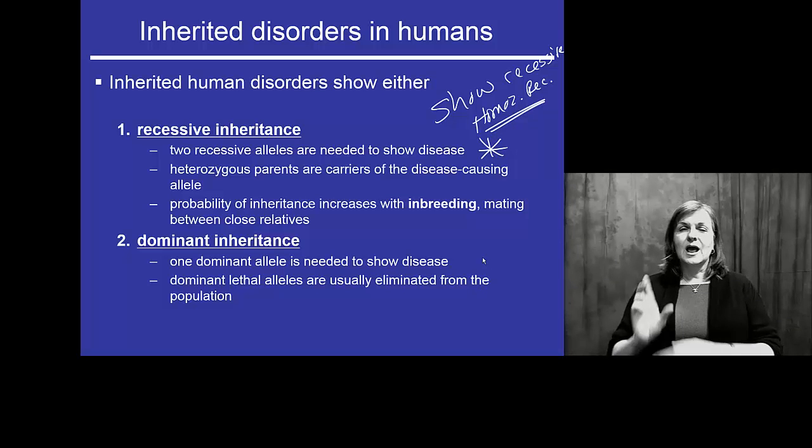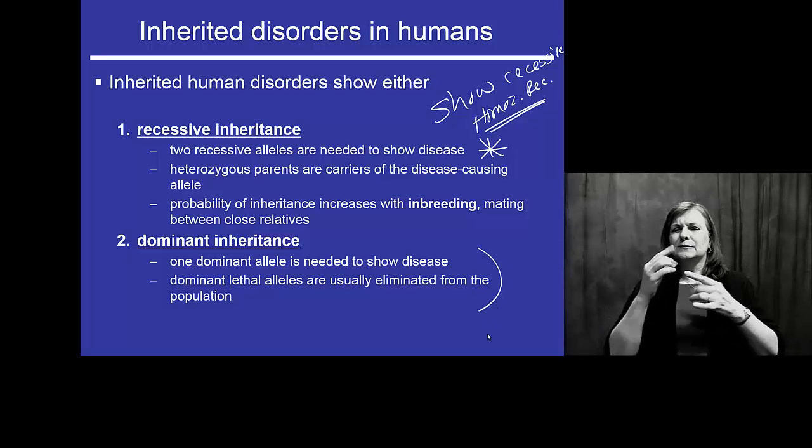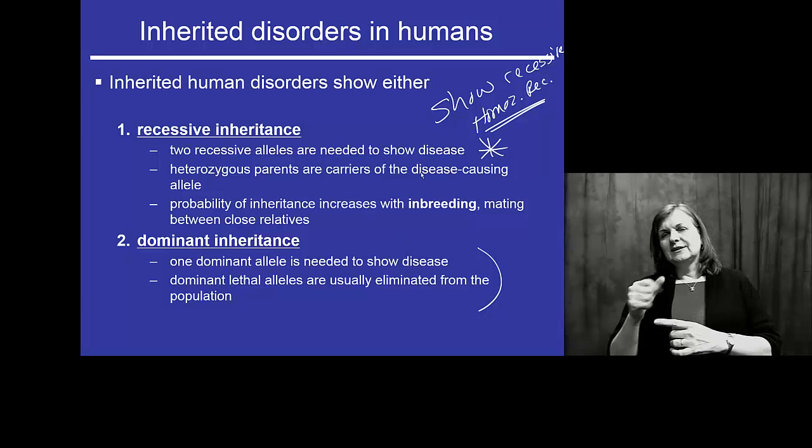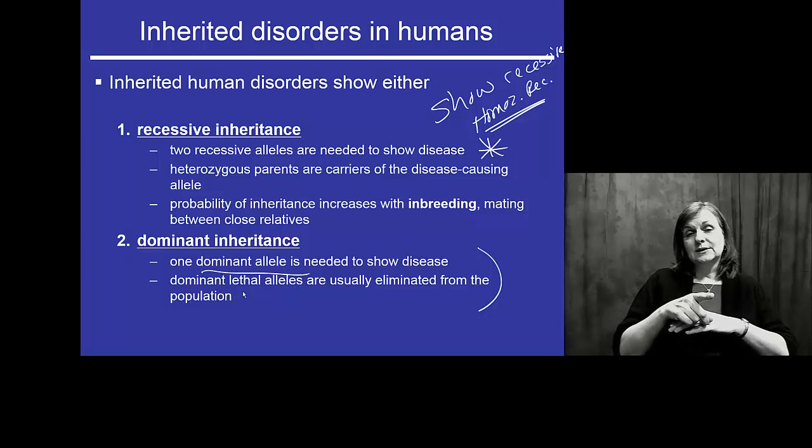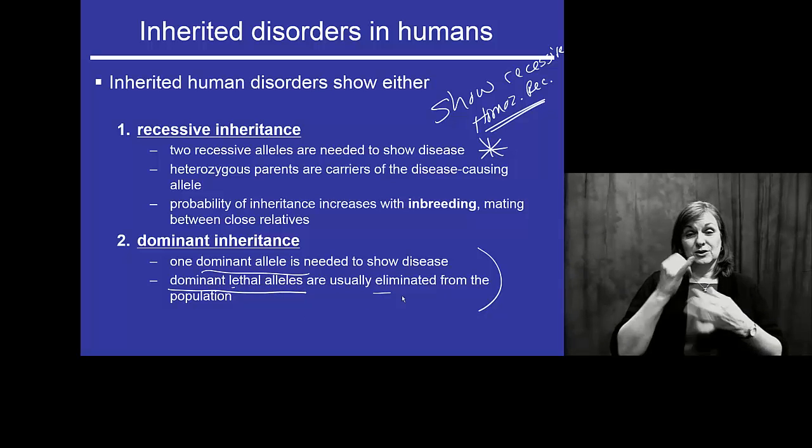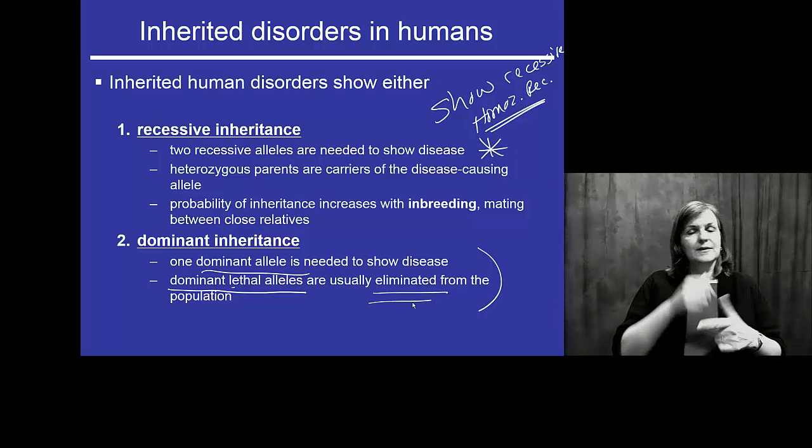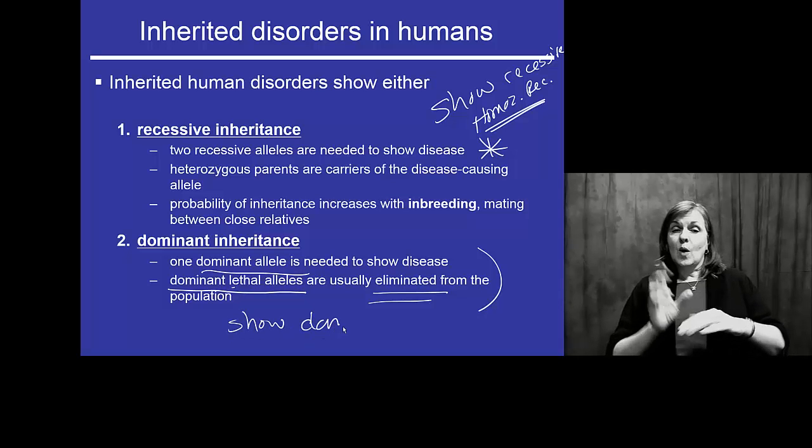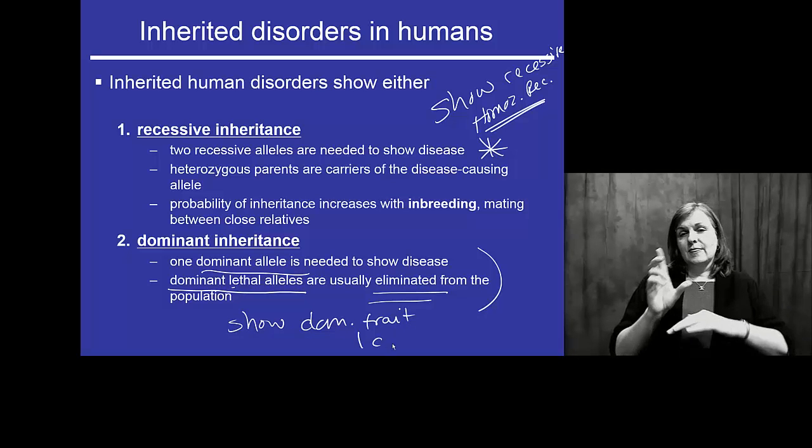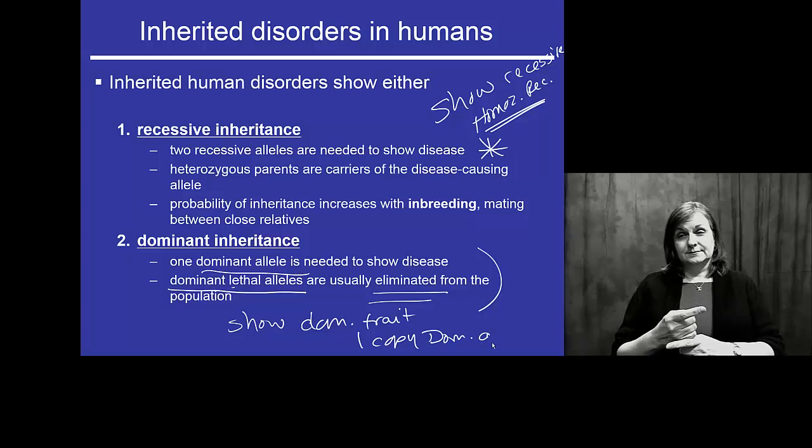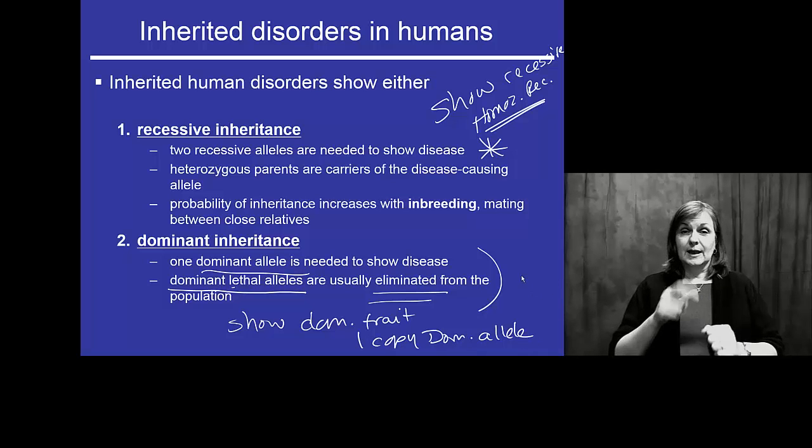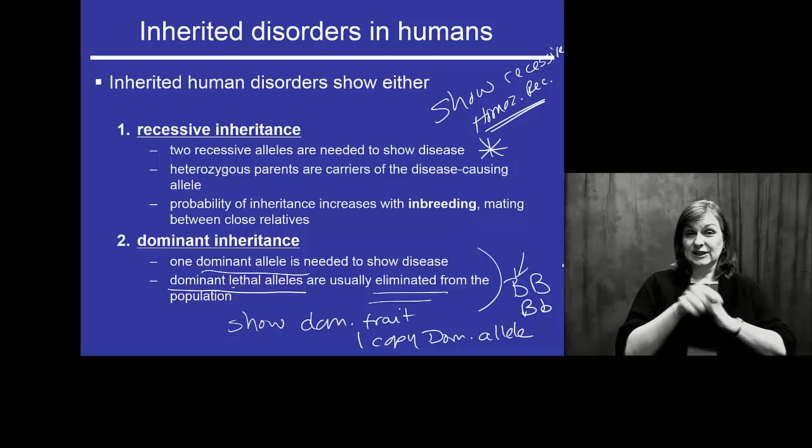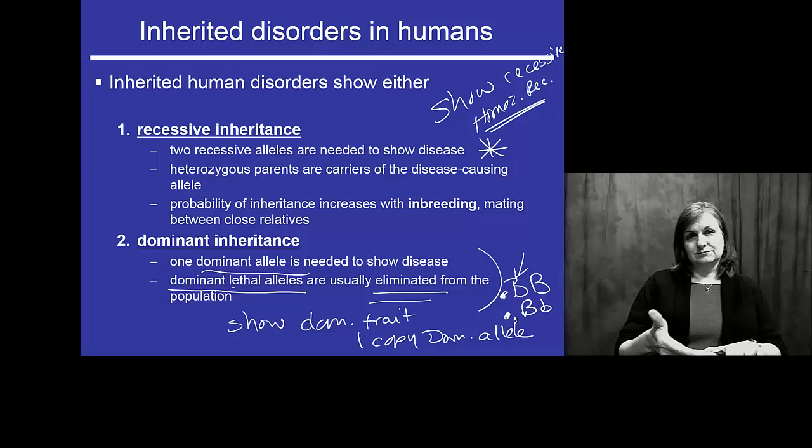Okay? Dominant inheritance, this is a more rare condition. We'll look at how recessive alleles carry in the population. Dominant alleles that cause disease, particularly ones that are lethal, are eliminated from the population very quickly. Why? Because, to show a dominant trait, you only need one copy of the dominant allele. So, you can be big B, big B, or big B, little b. If big B is lethal, either one of these would end in death.